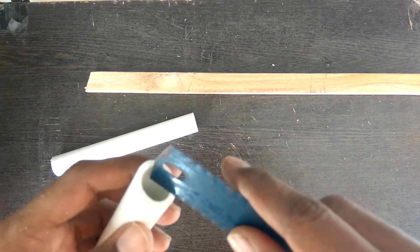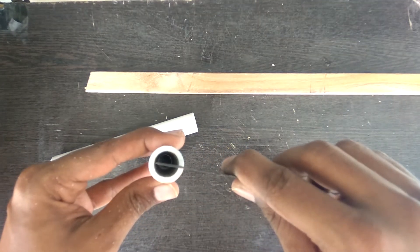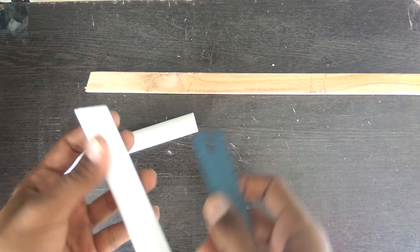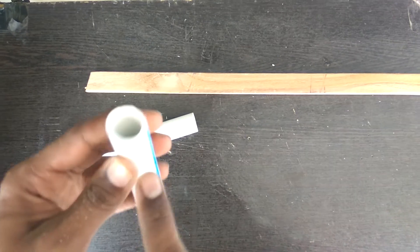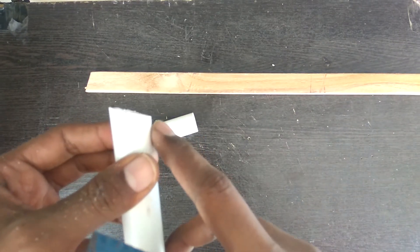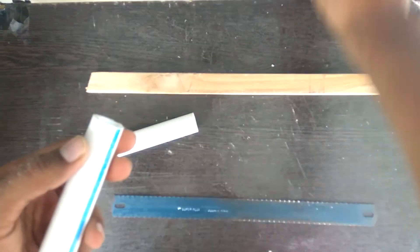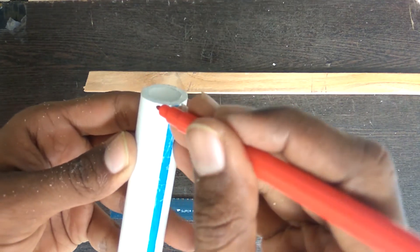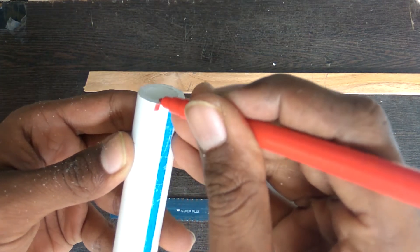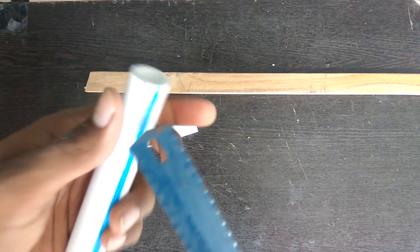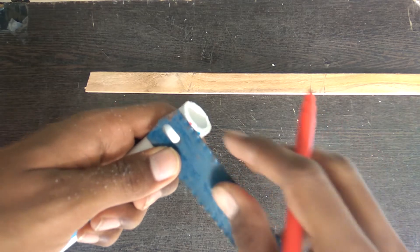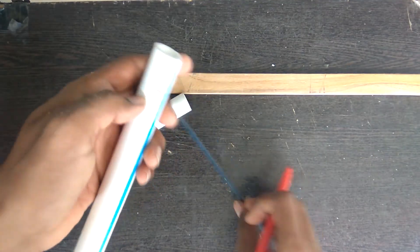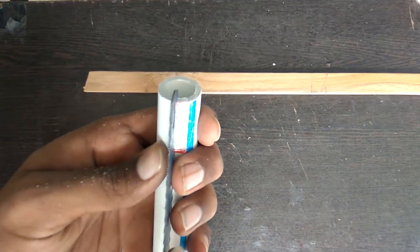Now I'll mark out the cutout for the bottom. The bottom has to house the hacksaw, so I'll make a snug fit cut for the hacksaw which will be right there. What I'm doing is taking the mark perpendicular to the point where we marked to drill the holes to mount the PVC pipe to the wooden frame. Then I'm marking out the height of the hacksaw, the width, and that's it.